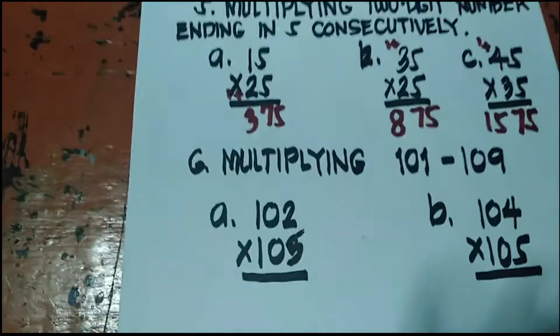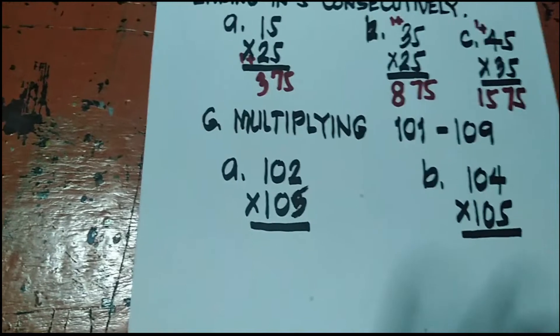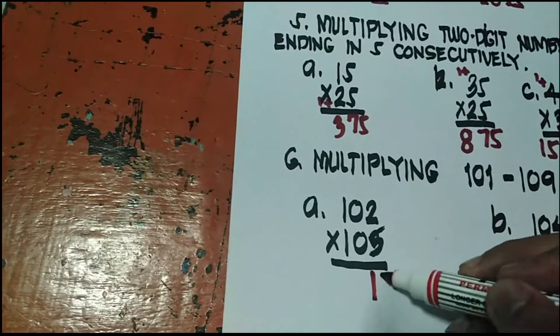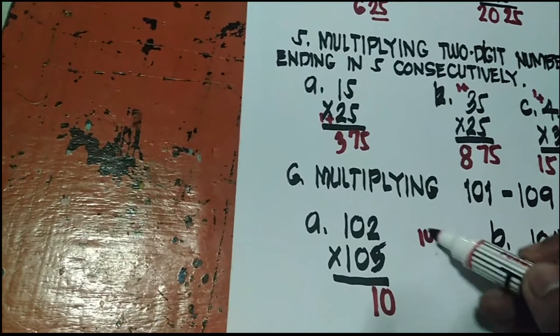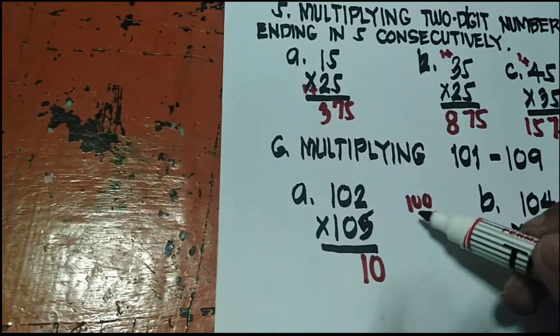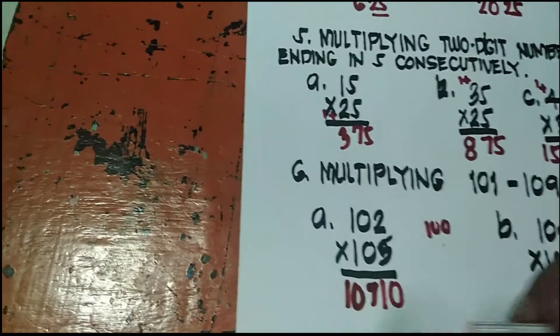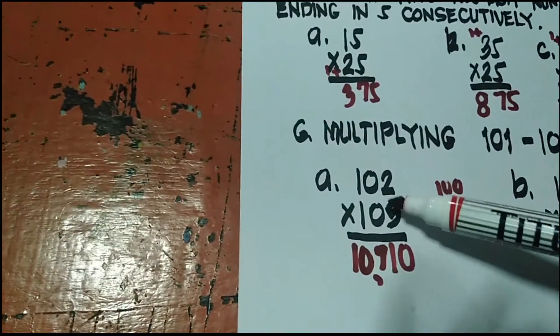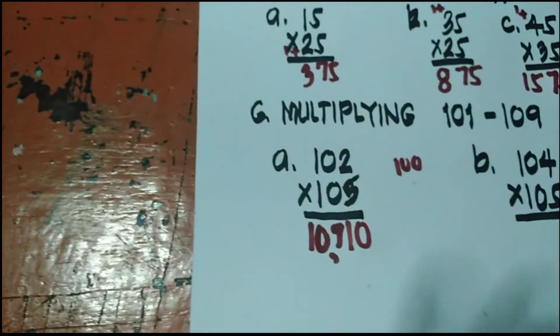The last is multiplying 101 to 109. Ang unang gabi mo, ito times mo sila. So 5 times 2 is 10. Then ipa-plus, 5 plus 2 is 7, may constant na 100. 5 plus 2 is 7 plus 100 is 107. So ang sagot, 10,710. Ulitin ko. 5 times 2 is 10. Then 5 plus 2 is 7 plus 100. So 107.